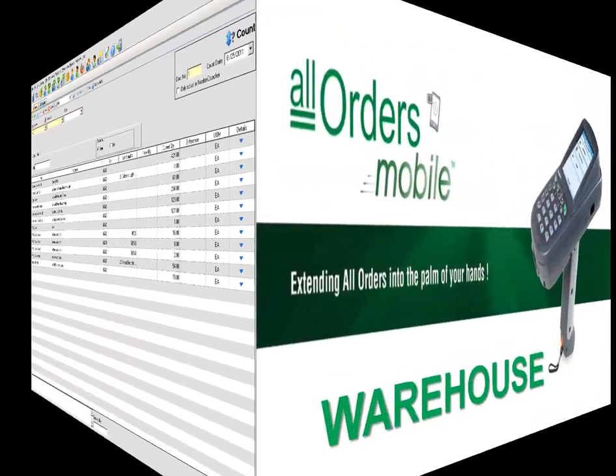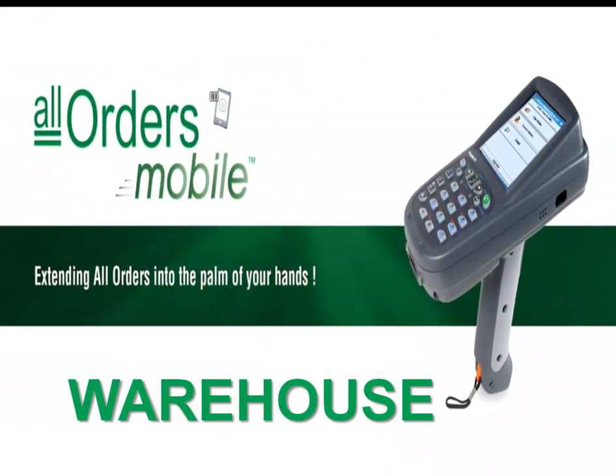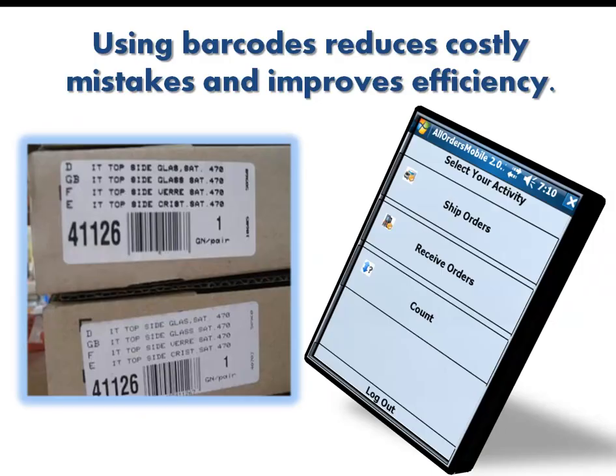All Orders Mobile by Number Cruncher will make your warehouse operations more efficient. Using barcodes reduces costly mistakes and improves efficiency. Use it to ship your sales orders and receive purchase orders. All Orders Mobile will also update your inventory count in the All Orders database with new quantities, all done in real-time over wireless networks.